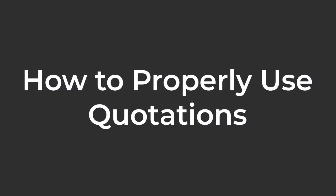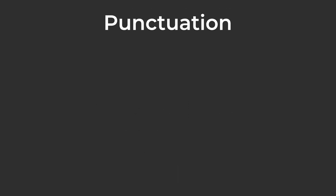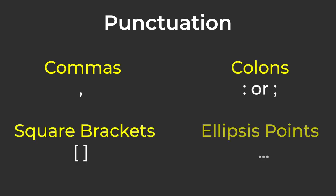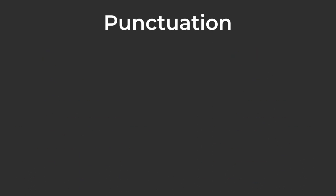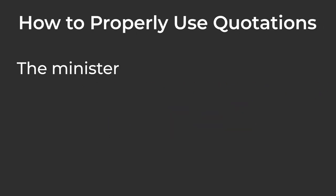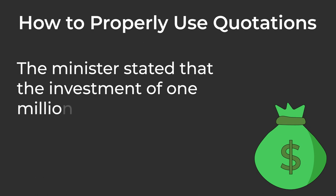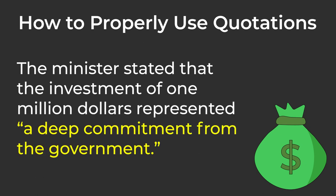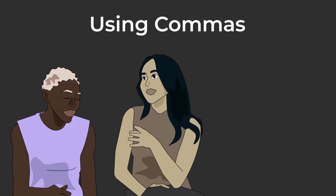So how do you do quotations right? Punctuation plays a part. To use quotations effectively, you'll likely need commas, colons, square brackets, and ellipsis points. However, if the quotation is not a complete sentence, no punctuation — except quotation marks — is required. For example: the minister stated that the investment of $1 million represented "a deep commitment from the government." Use a comma when your quotation is from one to four sentences long, even if they're short sentences.